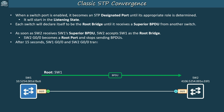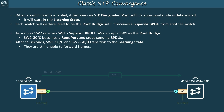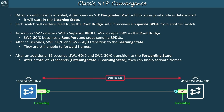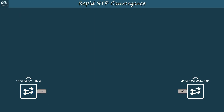After 15 seconds, SW1 G0/0 and SW2 G0/0 transition to the learning state. They can now learn MAC addresses if frames are received on those ports, but they are still unable to forward frames. Then, after an additional 15 seconds in the learning state, SW1 and SW2's ports can transition to the forwarding state — after a total of 30 seconds in the listening and learning states. SW1 continues sending BPDUs every two seconds because it is the root bridge. So that was a quick review of STP convergence — not a very quick process.